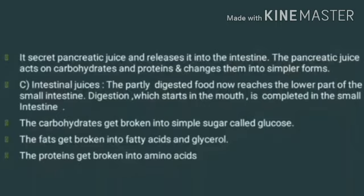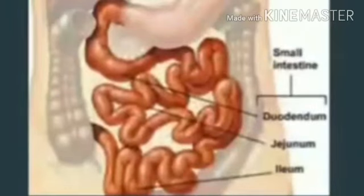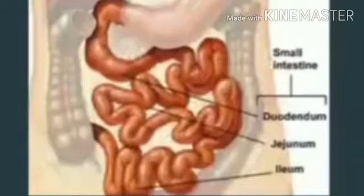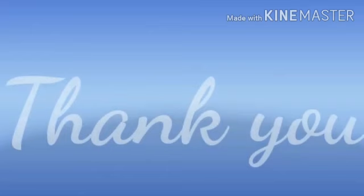Digestion, which starts in the mouth, is completed in the small intestine. Carbohydrates are broken down into simple sugars such as glucose. Fats are broken down into fatty acids and glycerol. Proteins are broken down into amino acids. The small intestine has three parts: duodenum, jejunum, and ileum. These parts absorb the food items and convert them into simple substances.